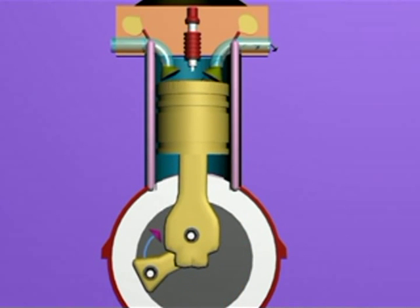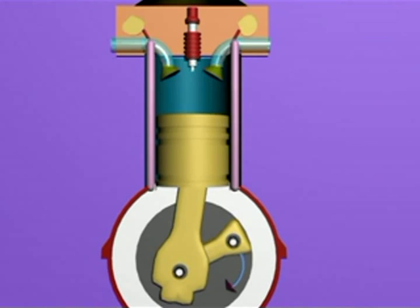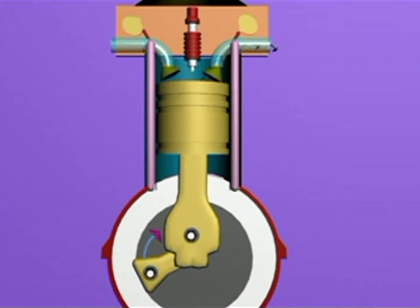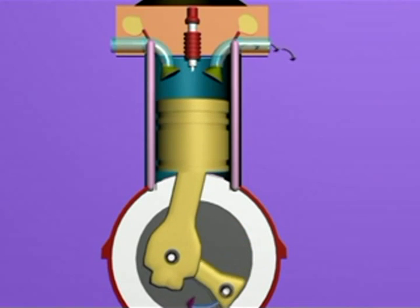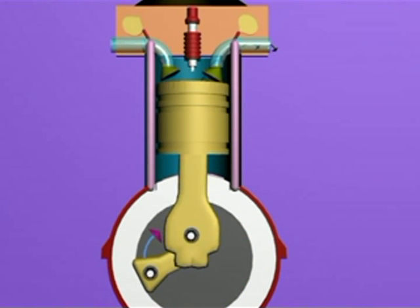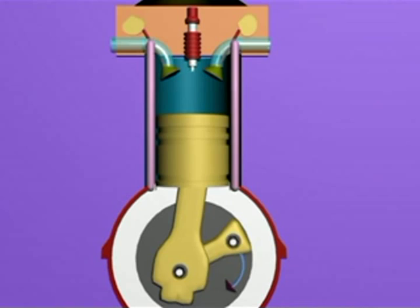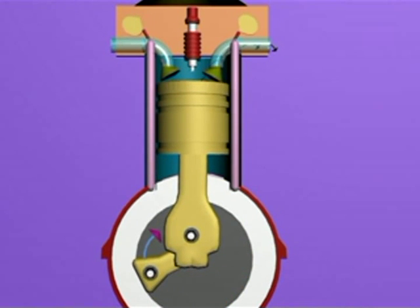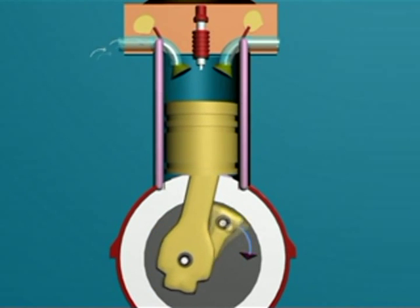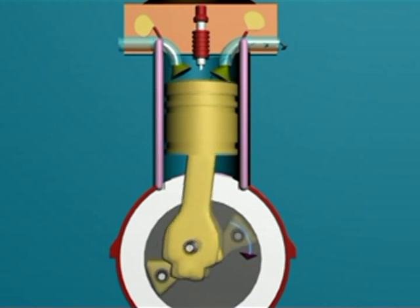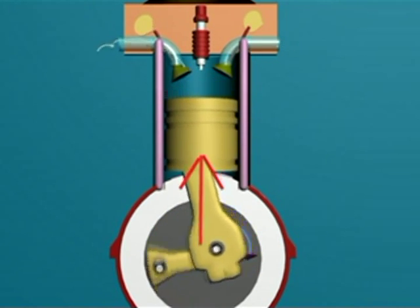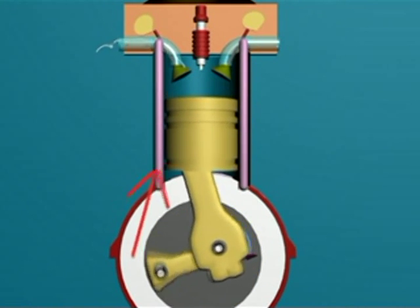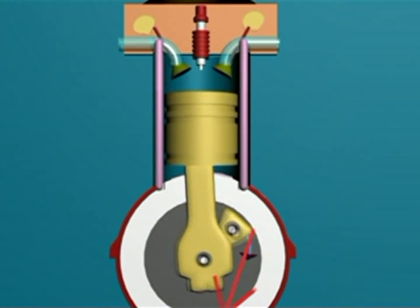Exhaust stroke: During this stage, the outlet valve opens and the piston moves upwards pushing out the exhaust gases like carbon dioxide, sulphur dioxide, and water vapour through the outlet valve. The outlet valve then gets closed and the next cycle starts. Here, the linear motion of the piston is converted into rotatory motion by the crankshaft.